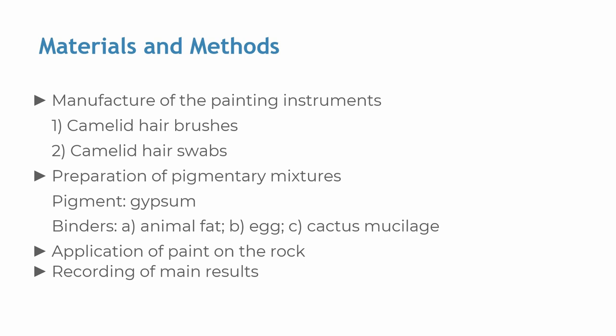We considered four application techniques: with the fingertip, with the camelid hair brush, with the wooden stick, and with the camelid hair swab. Those techniques were combined with pigment mixtures made with gypsum — bi-hydrated calcium sulfate — combined with three binders: whole egg, a protein-based binder; cow fat, a lipidic binder; and cactus mucilage polysaccharide. The pigment was selected following archaeometric analysis.